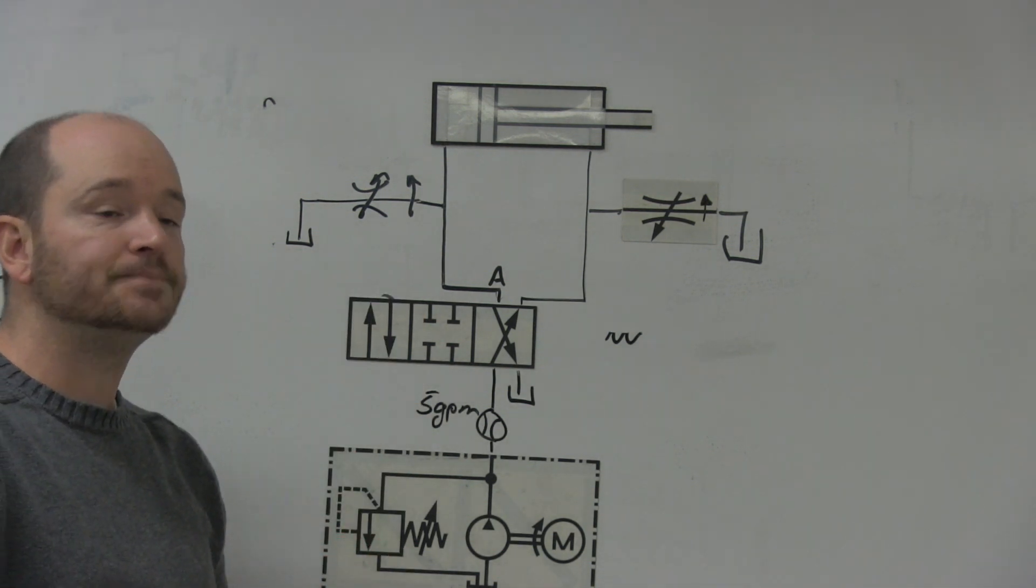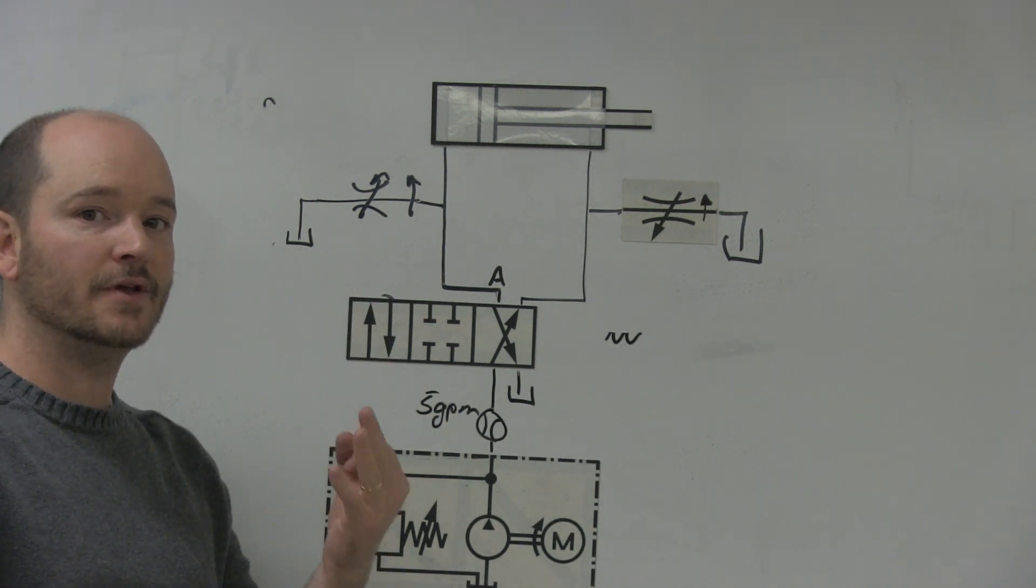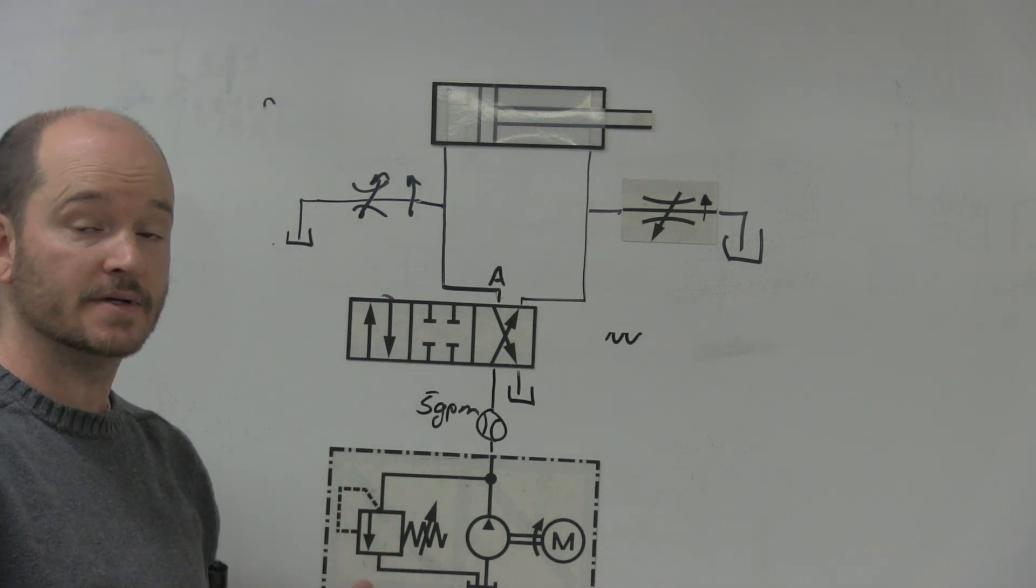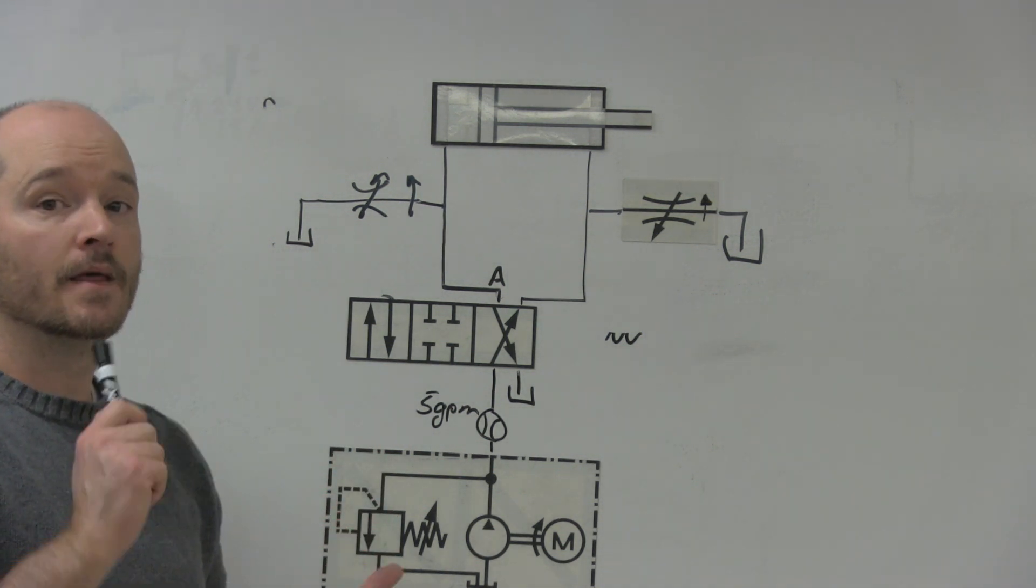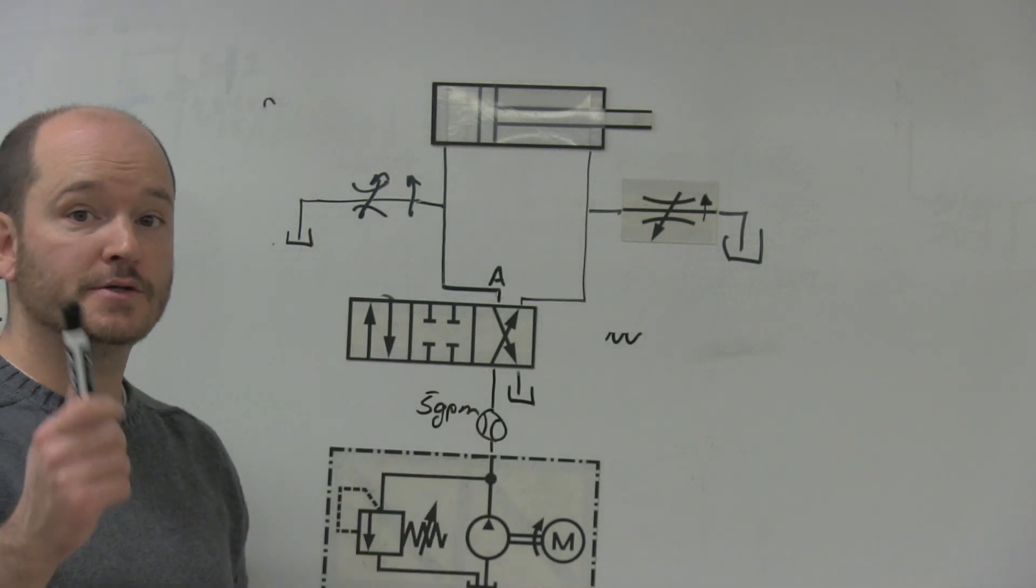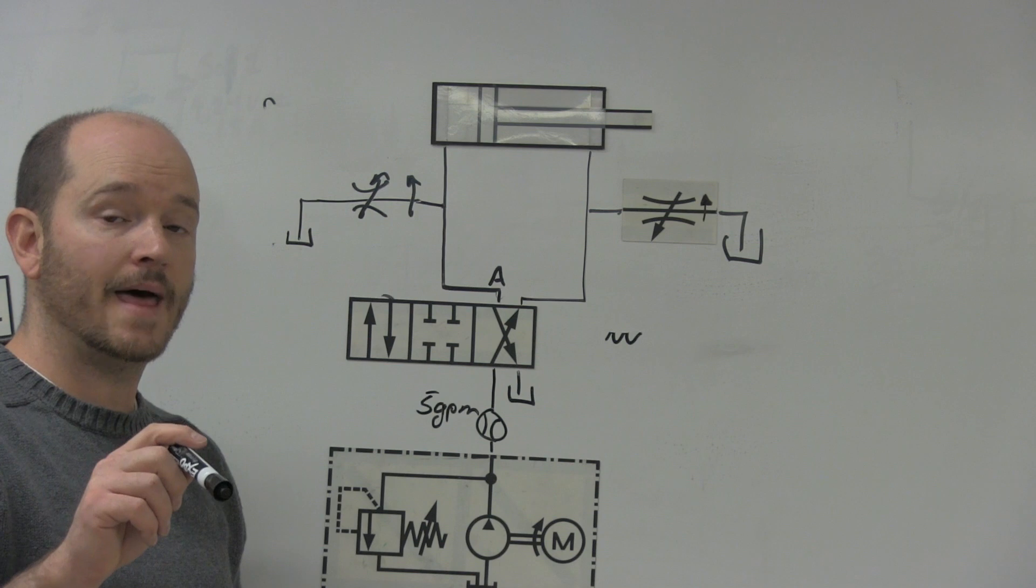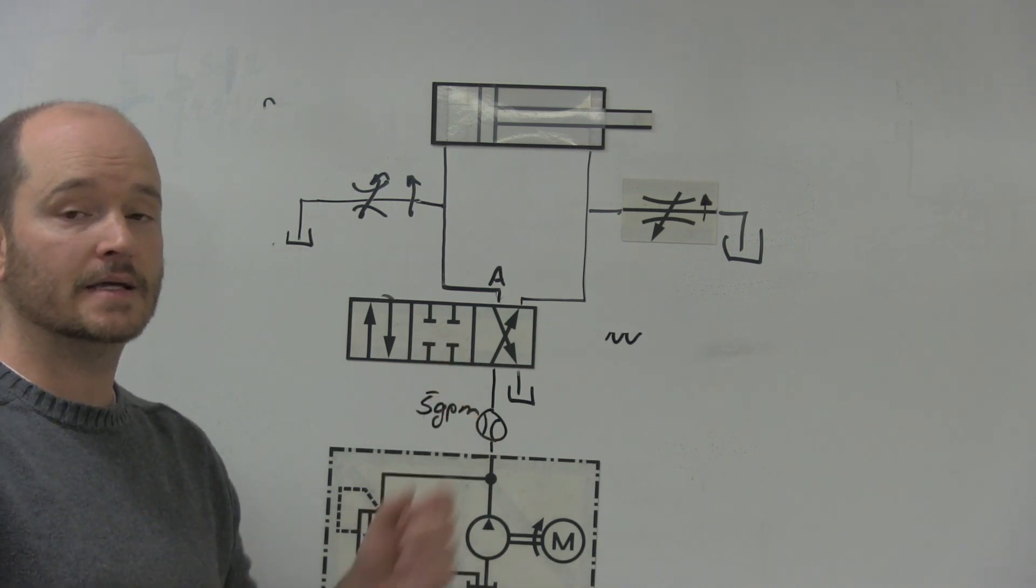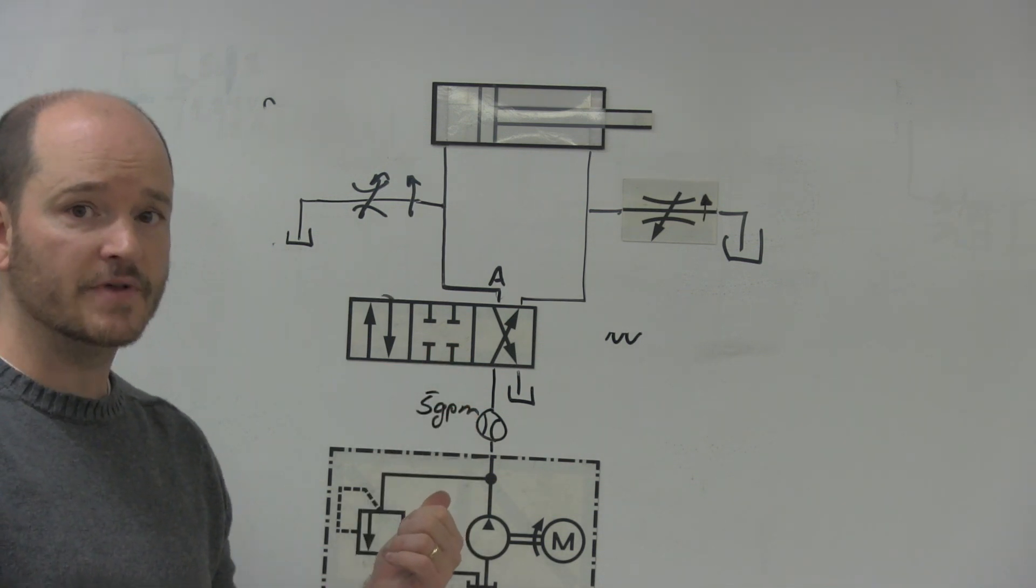So this is a bleed off circuit. Again, there are typically three ways you control the speed of a cylinder to make it variable: your meter in, your meter out, and your bleed off circuit. So if you're curious about meter in and meter out, I have another video on that in my library, and I'll link it to the end of this video.